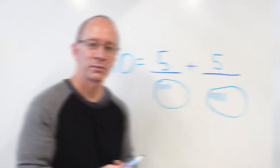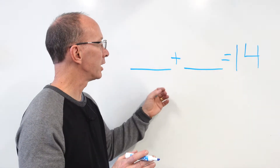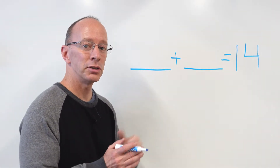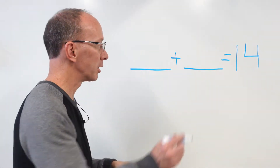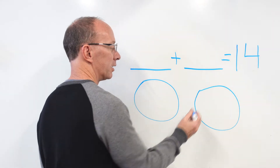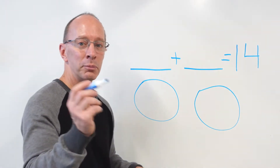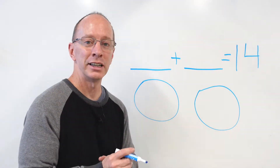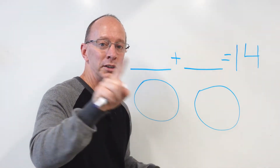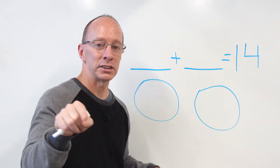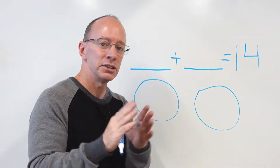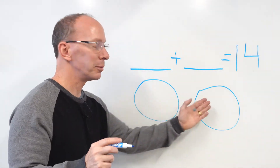All right, let's do another problem. We have a number plus another number that equals 14 and we need to make two equal groups. So once again, I'm going to make a big circle underneath each blank. We're going to put tally marks into these circles and count to 14: 1, 2, 3, 4, 5, 6, 7, 8, 9, 10, 11, 12, 13, 14. So let's use that same technique as we put them into the circles.